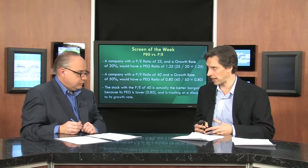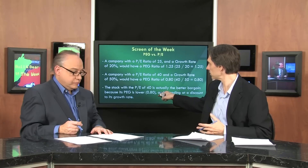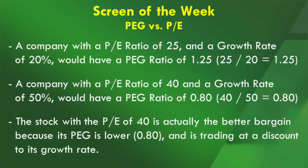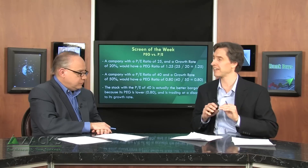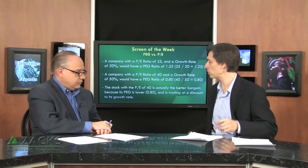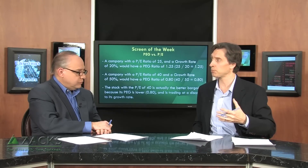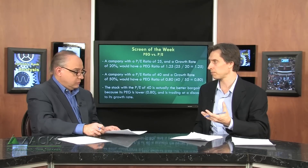Traditionally, an investor would look at the stock with the lower P/E ratio and determine that to be the better value. However, when you're using the PEG ratio, you may come up with a different conclusion. The stock with the P/E ratio of 40 is really the better value because the PEG ratio is lower, which shows it's trading at a discount to its growth rate. The lower the PEG ratio generally is considered better because the investor would be paying less for each unit of earnings growth. The one with the higher PE actually is the better value because the PEG is lower, meaning it's trading at a greater discount to its growth rate — an important metric when buying a stock.